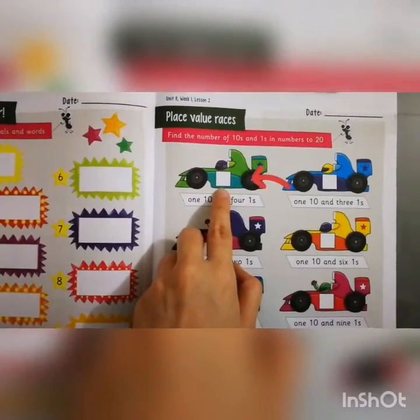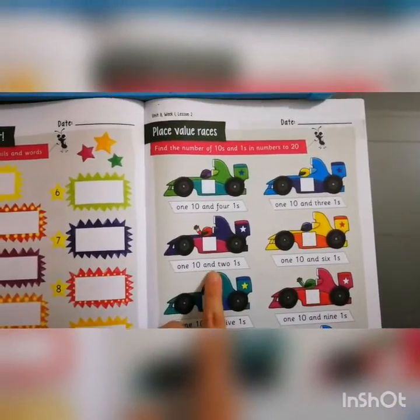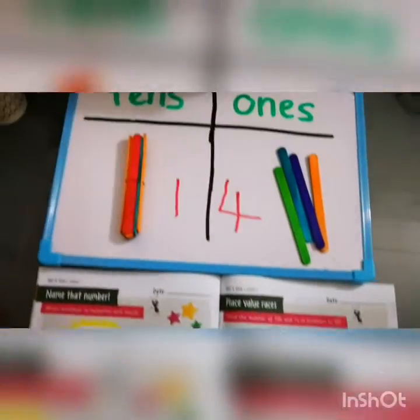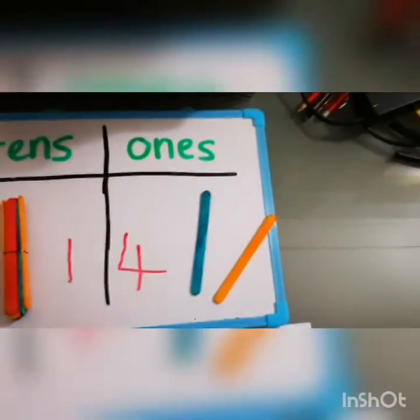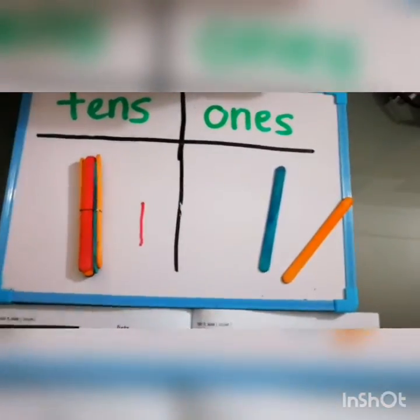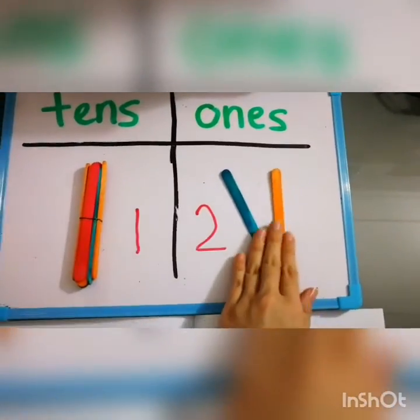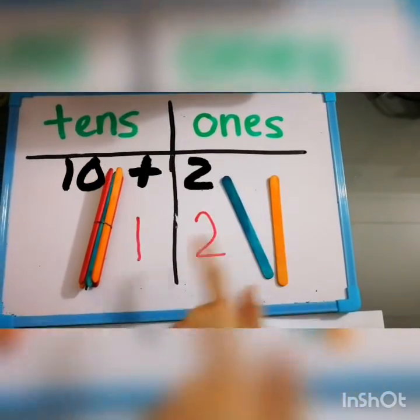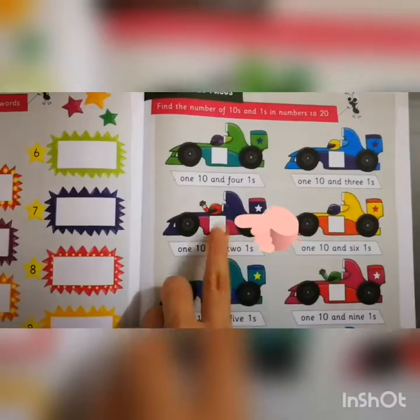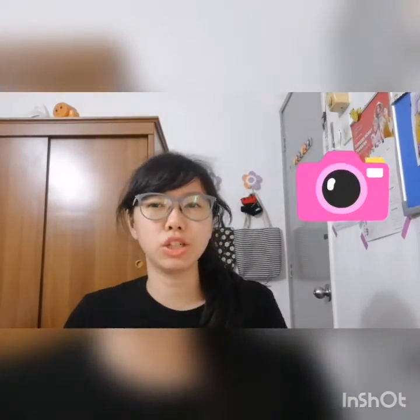So in this square box write 14. Let's do the second one together — 1 ten and 2 ones. So using the popsicle sticks we have 1 ten and 2 ones, so this is no longer 4 — change it to number 2. So 1 ten and 2 ones makes 12, because 10 plus 2 equals 12. Write the answer in the box, then try the other race cars by yourself. Once you've completed your work, please take a picture of both pages and submit it to this online classroom so that I can have a look.